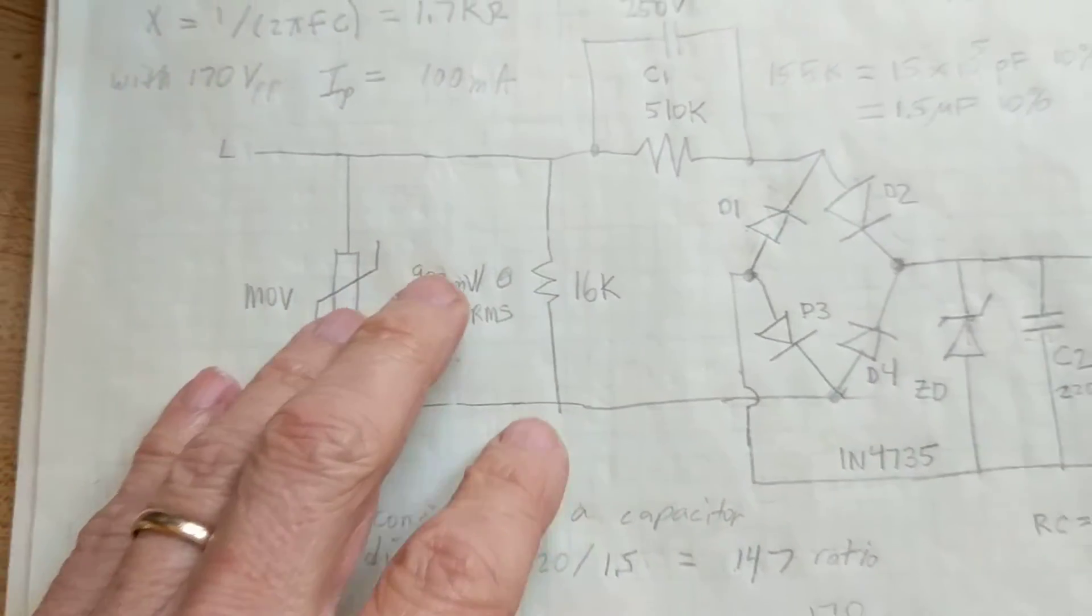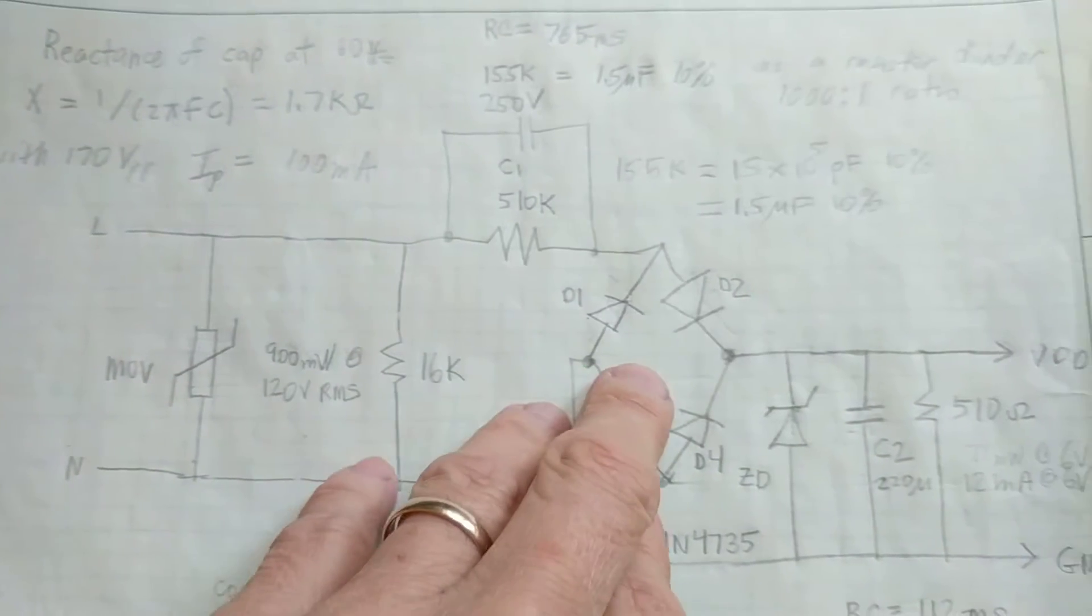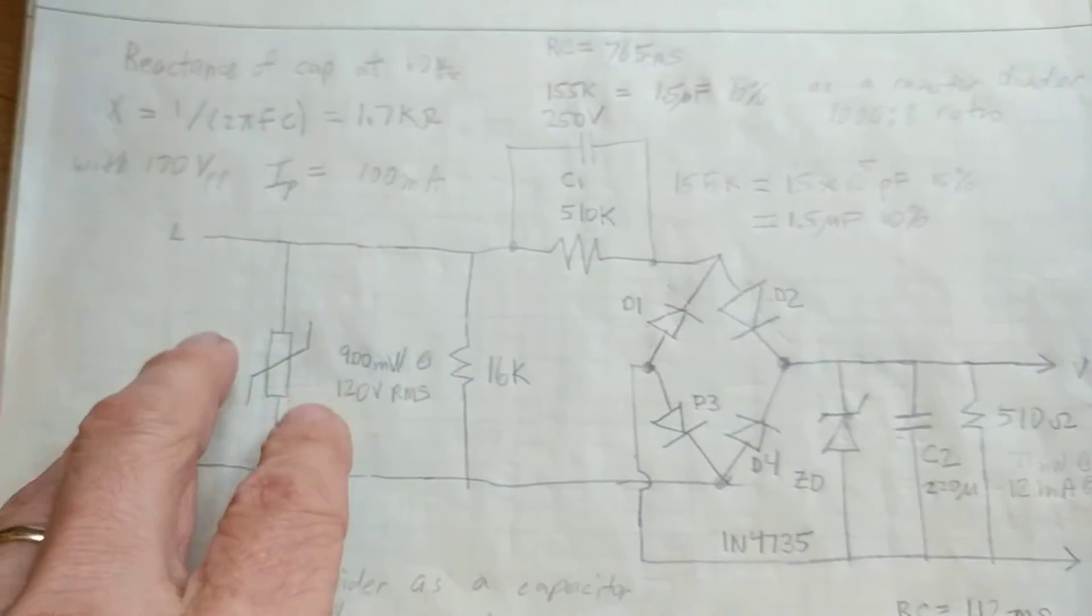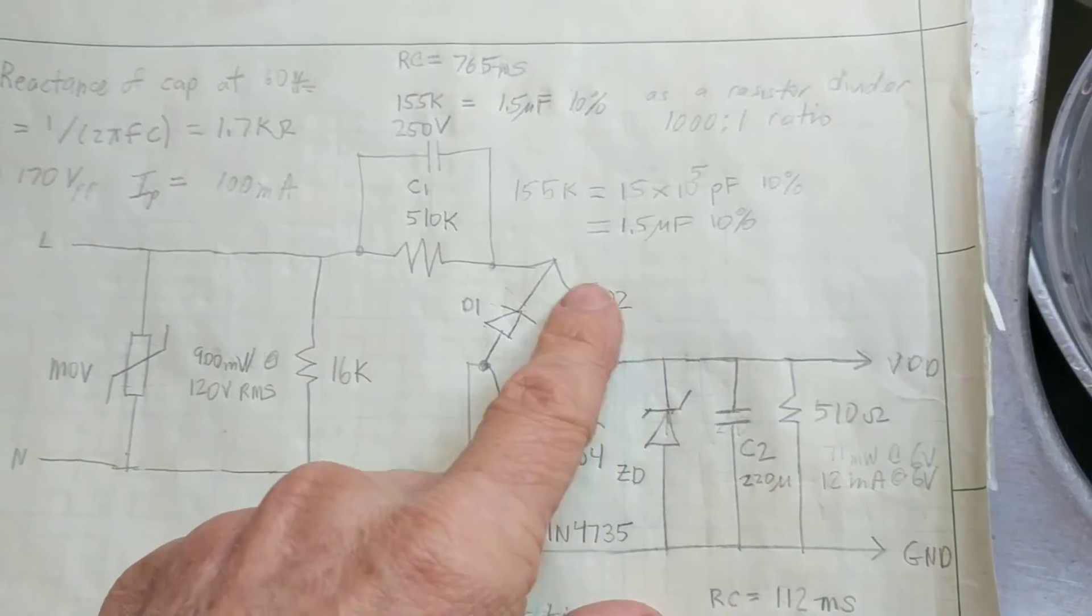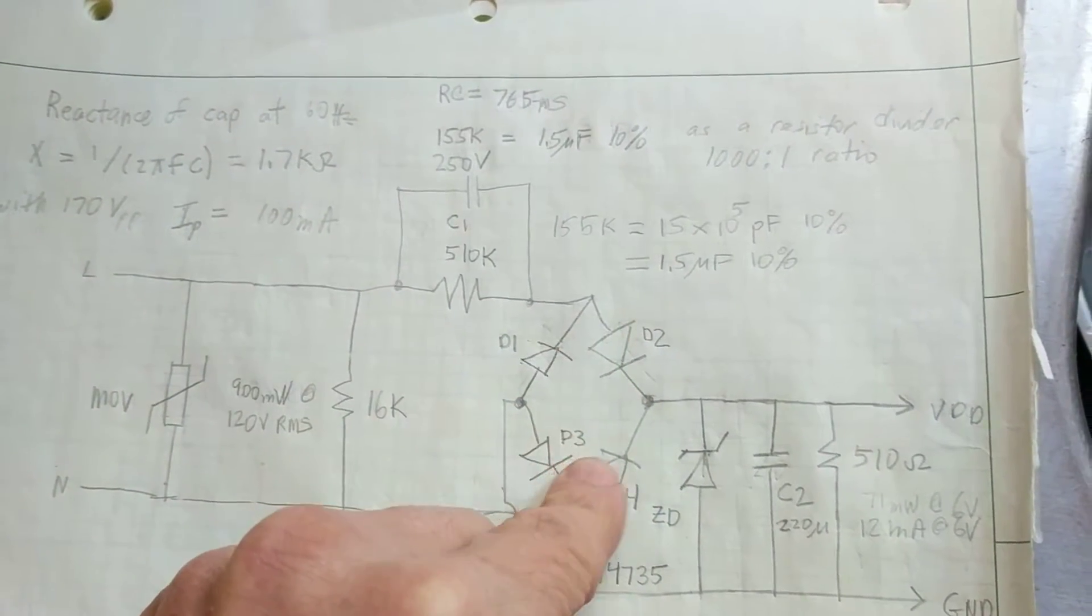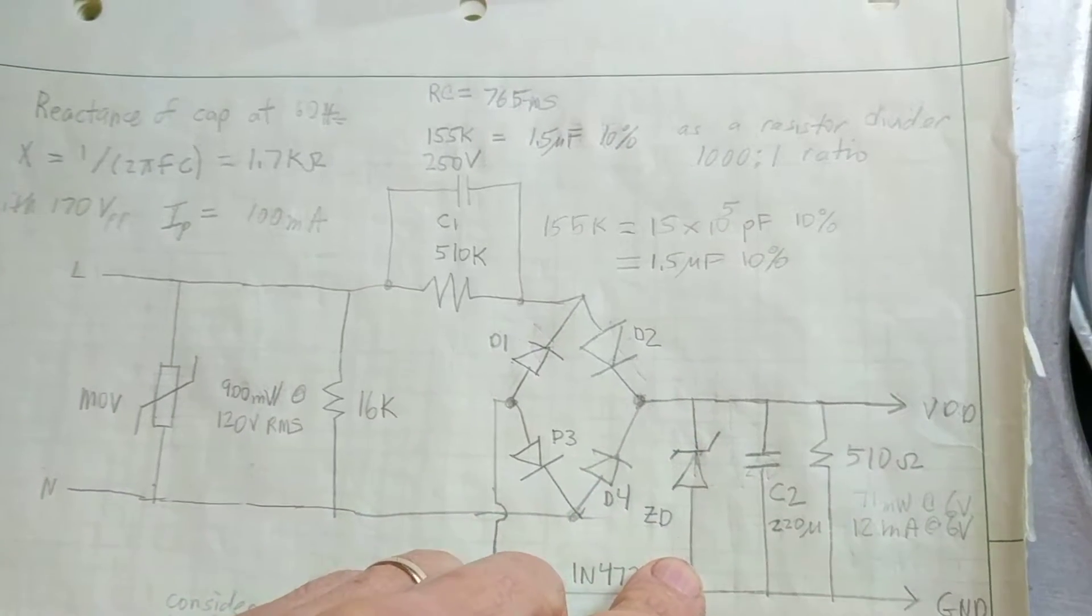Now here's just a blow up of just that portion of the circuit. The line voltage comes in here. There's a full bridge rectifier. And there's the Zener.